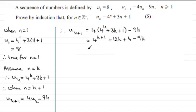And if we clean this up we've got the first term there, 4^{k+1}. We've got 12k minus 9k, so that's 3k, and then the plus 4.